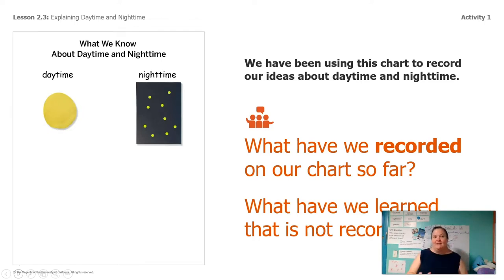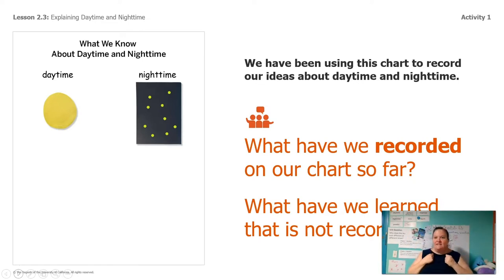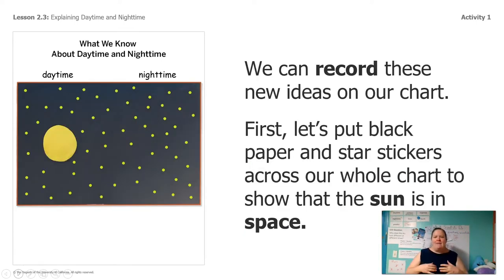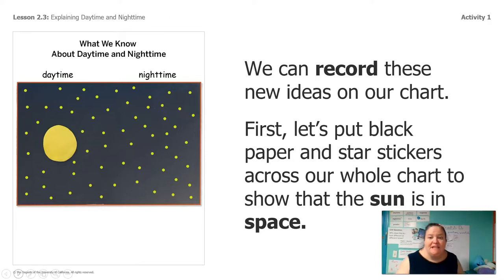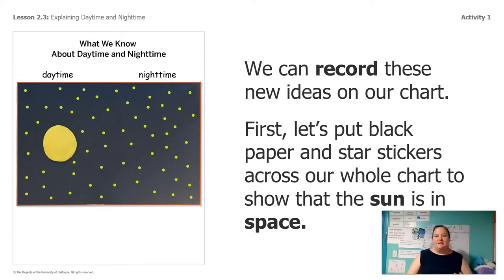We're going to make a chart called 'What We Know About Daytime and Nighttime.' One side will have daytime and the other side will have nighttime, and we'll record everything we know so far. When it's daytime we see the sun, and when it's nighttime we see the stars. I'm going to make the whole chart have black paper with star stickers, because the sun is actually in space — so the sun is in space. Let's take a closer look.